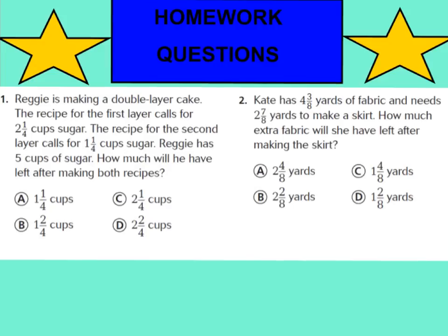Here are your homework questions for tonight. You need to do numbers 1 and 2 in your GoMath book, page 148. You do not have to do the other numbers on page 148, just 1 and 2. When you're done, I want you to assess yourself: tell me if you feel like you're a novice — level 1, apprentice — level 2, practitioner — level 3, or expert — level 4. I will see you tomorrow when we can do some fun activities to practice this.